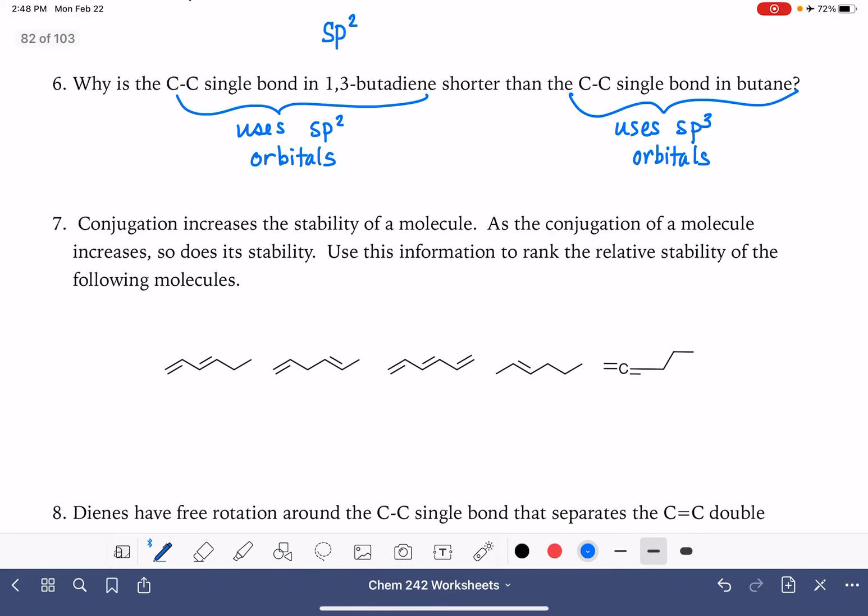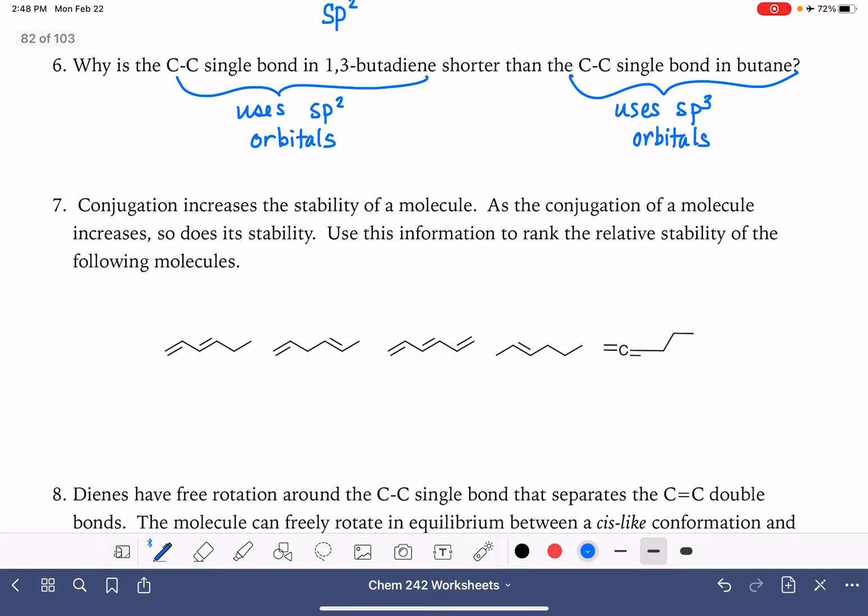Next, we're going to rank some molecules with double bonds in them. Conjugation increases the stability, so we want to rank these molecules based off of their stability. And let's say that I'm going to use one for the molecule that is the most stable.